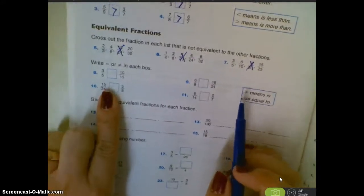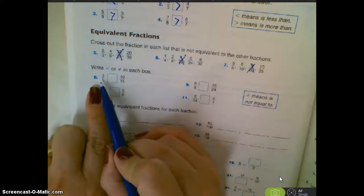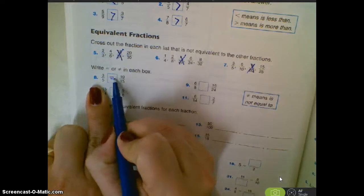On this one, we need to write equals, if it's equal, or not equal, if it's not equal. So five times three is 15. Three times three is not 10. So not equal on that one.